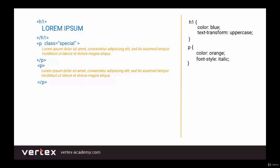We're going to add the word class in the p tag, and then give this class the name 'special', for example. Please note that we use the name special, but you can use any name you want. Next, in CSS, we're going to refer to this class. To do that, we write dot and then the name of the class — that is, the word 'special' in our case. Then in the curly brackets, we're going to add the property of this class. We're going to write color black, for example. And now, as you can see, specifically our first paragraph changed its color from orange to black.